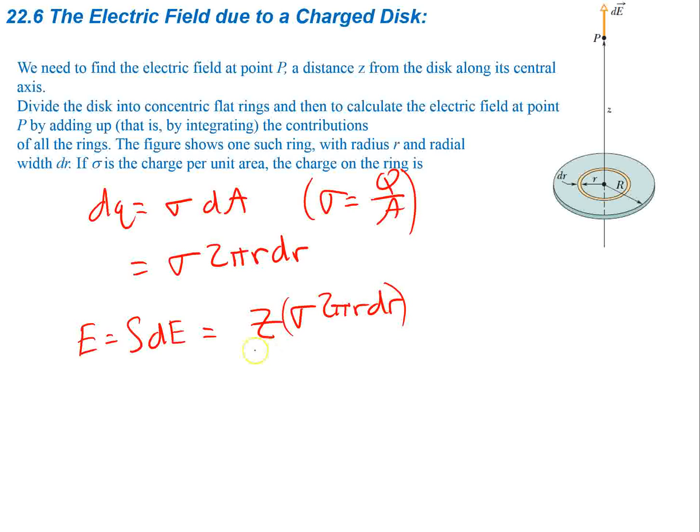This is all going to be divided by 4π epsilon naught times the radius squared. So the radius in this case is going to be the distance from point P all the way to our ring.